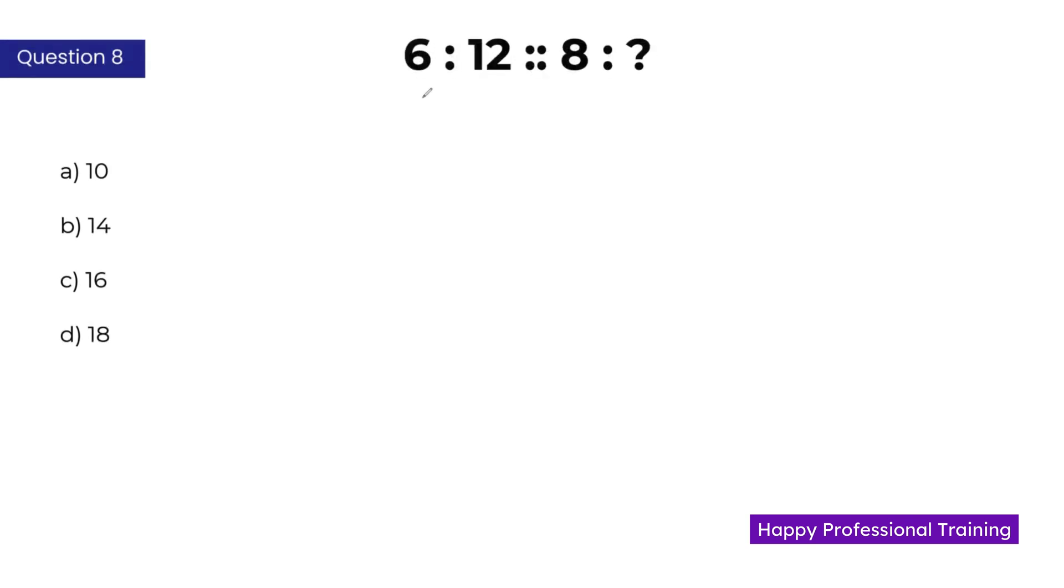The second number is twice as the first number. So 6 into 2 is 12. Similarly, apply to the second pair. Here, 8 into 2 is 16. C is the correct answer.